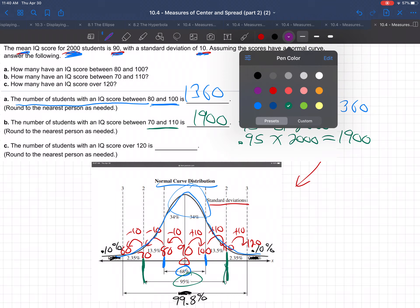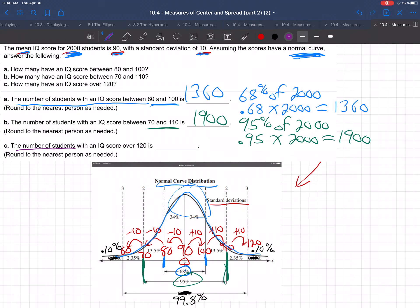Okay, now final question, find the number of students with an IQ score over 120. Now where's 120? Right there, 120. And notice it's .10% that are above that, .10%.